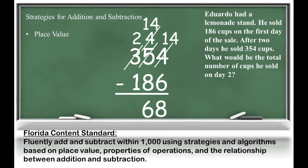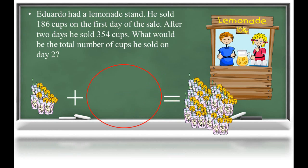So 14 minus 8 is 6. 2 minus 1 is 1. So our solution is 168. So when I look back at my original problem, that missing addend I had should be 168.